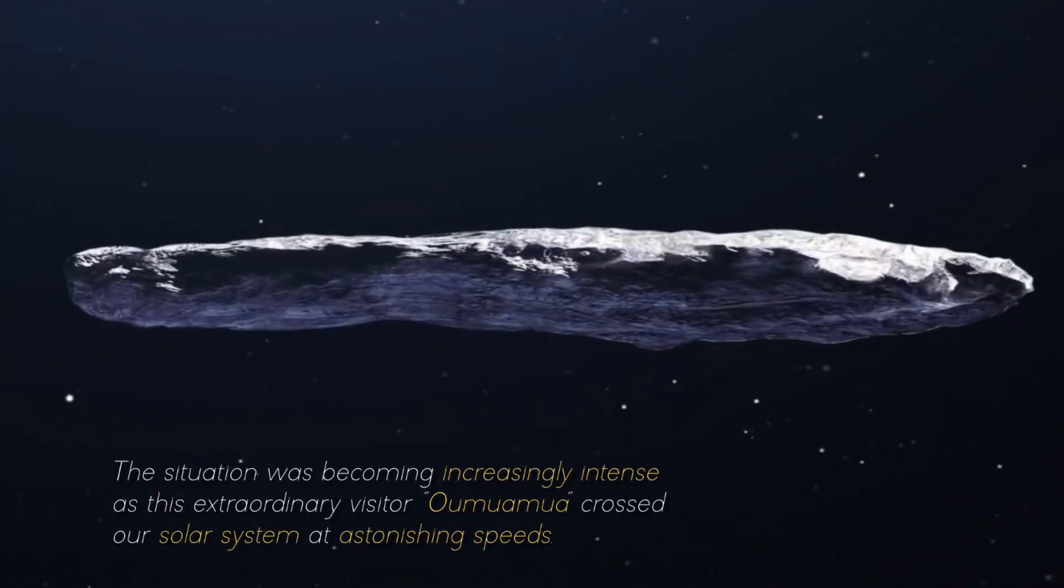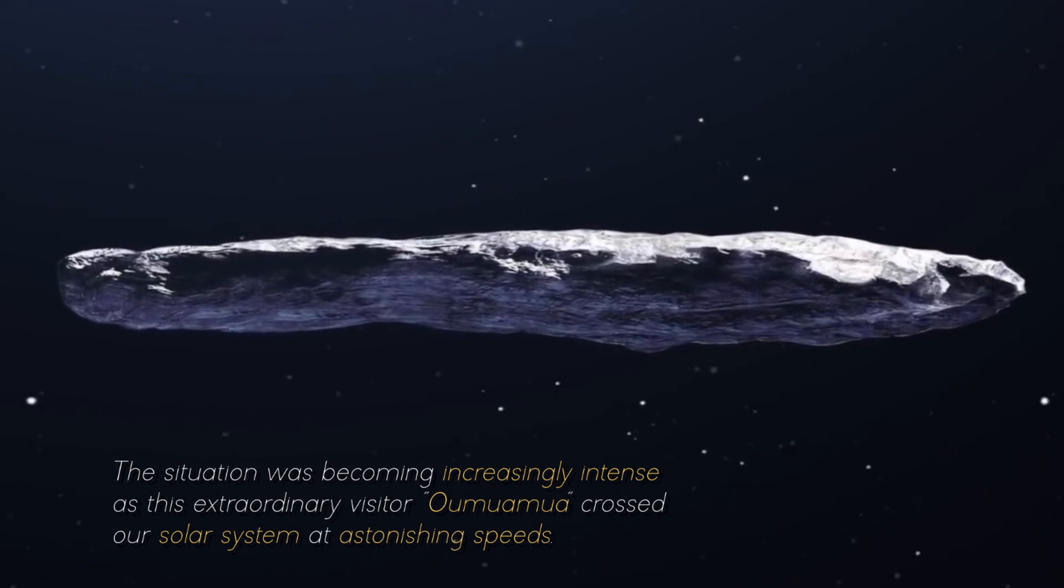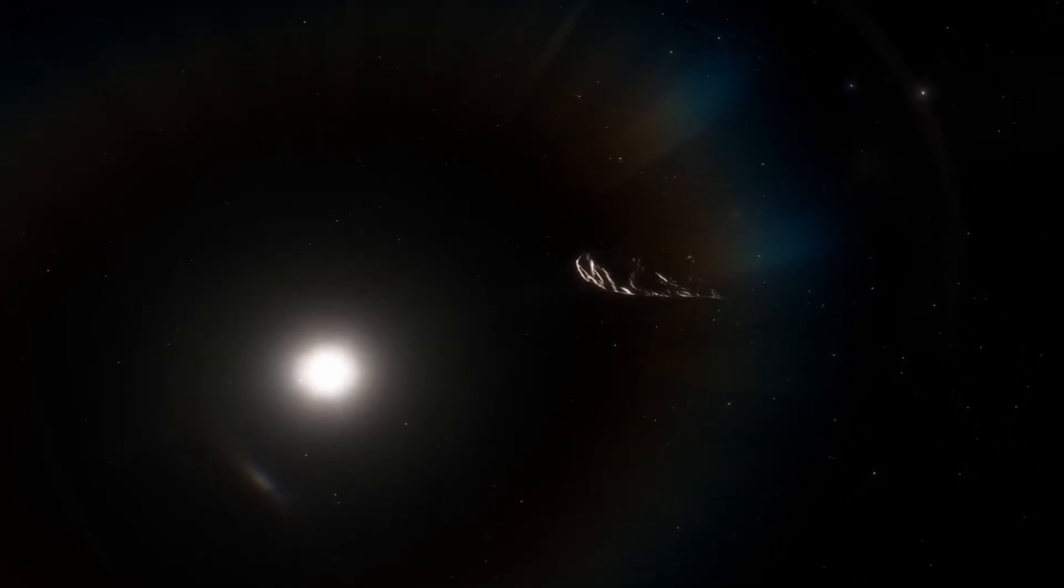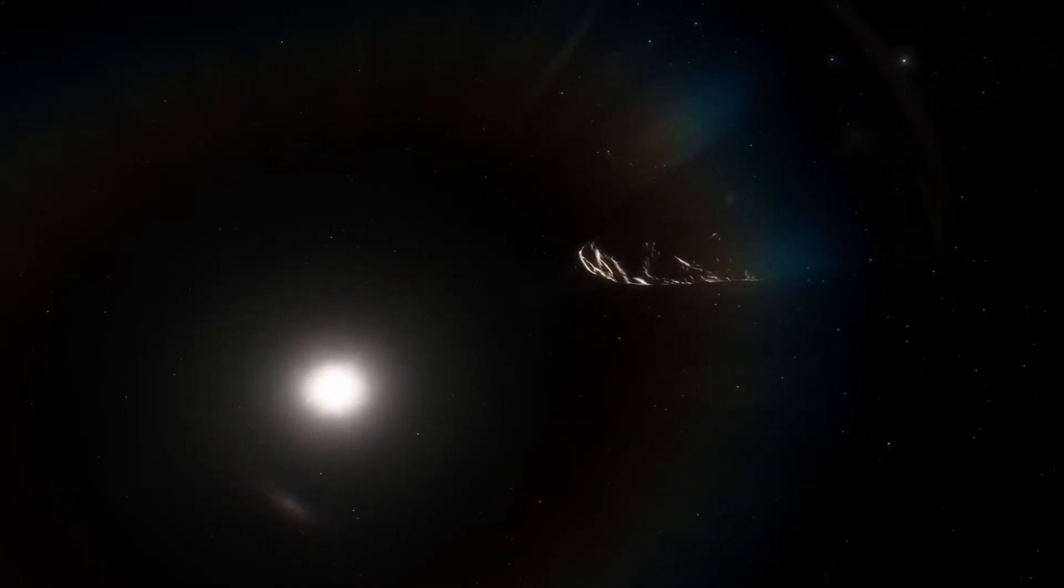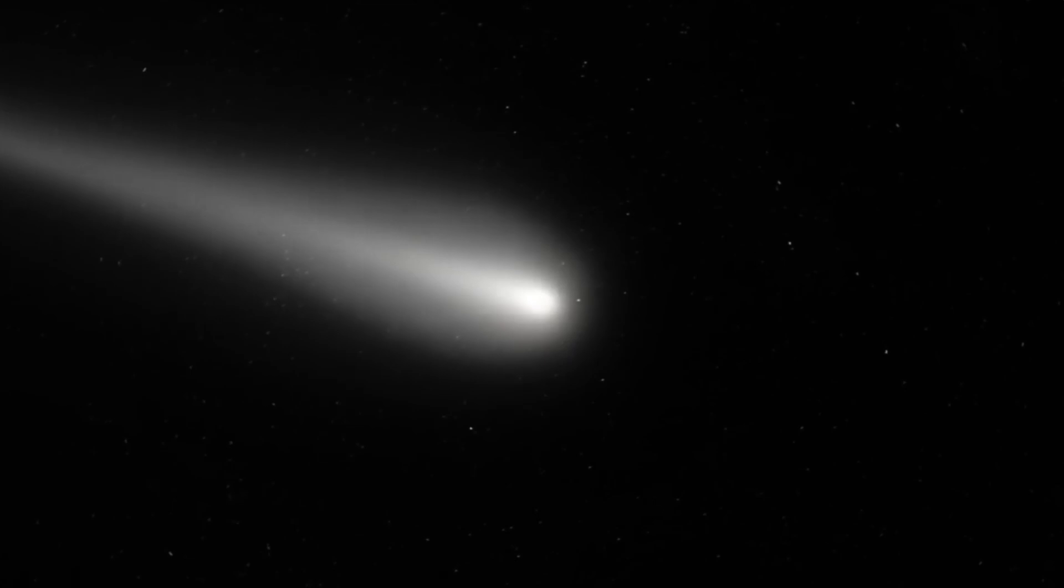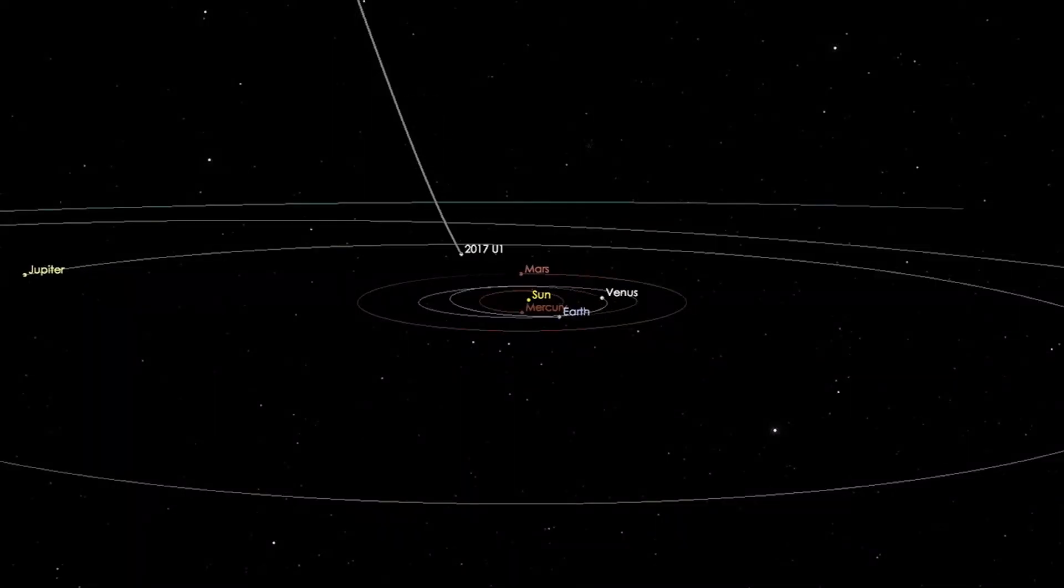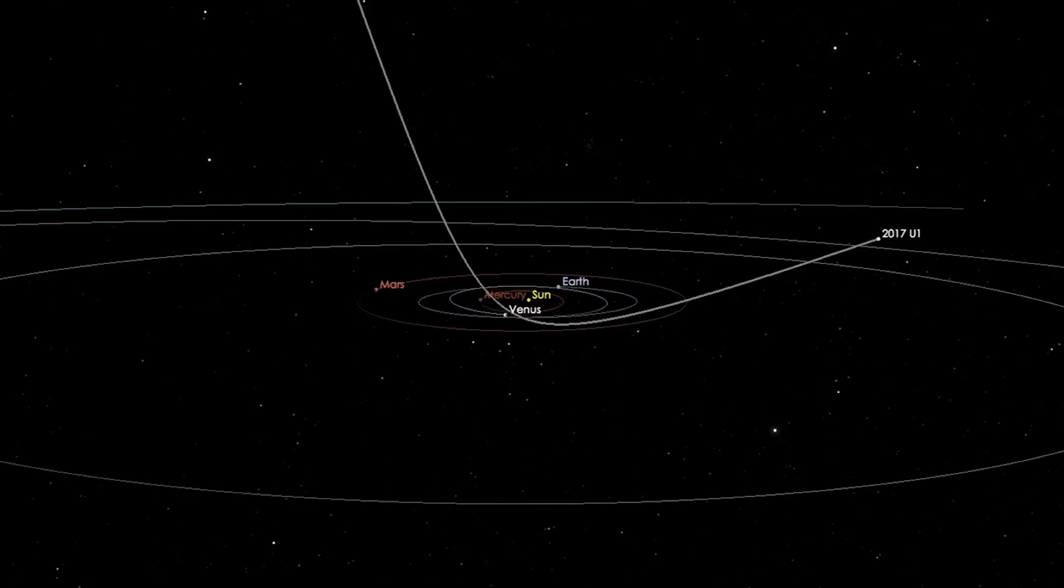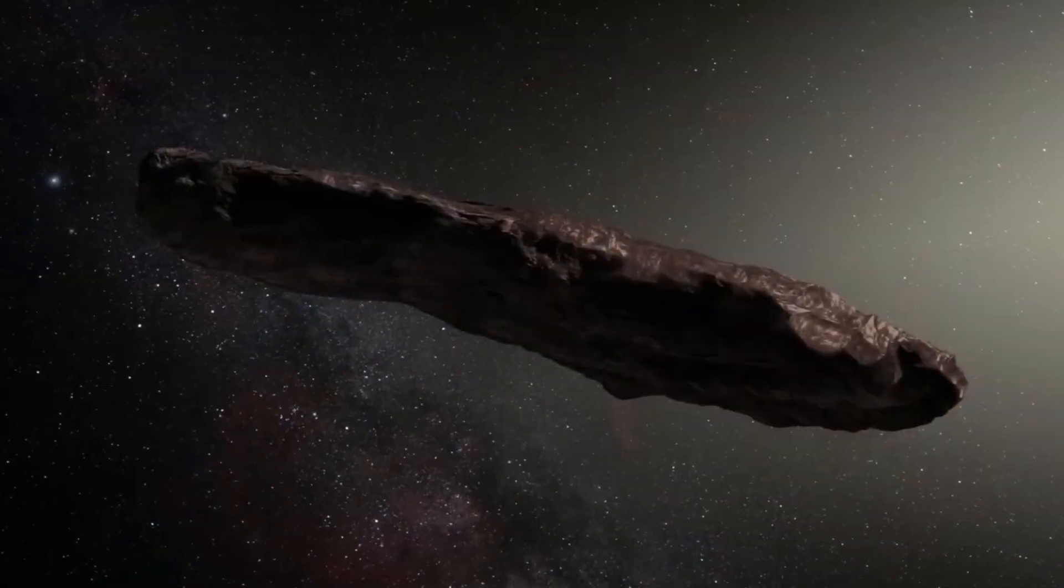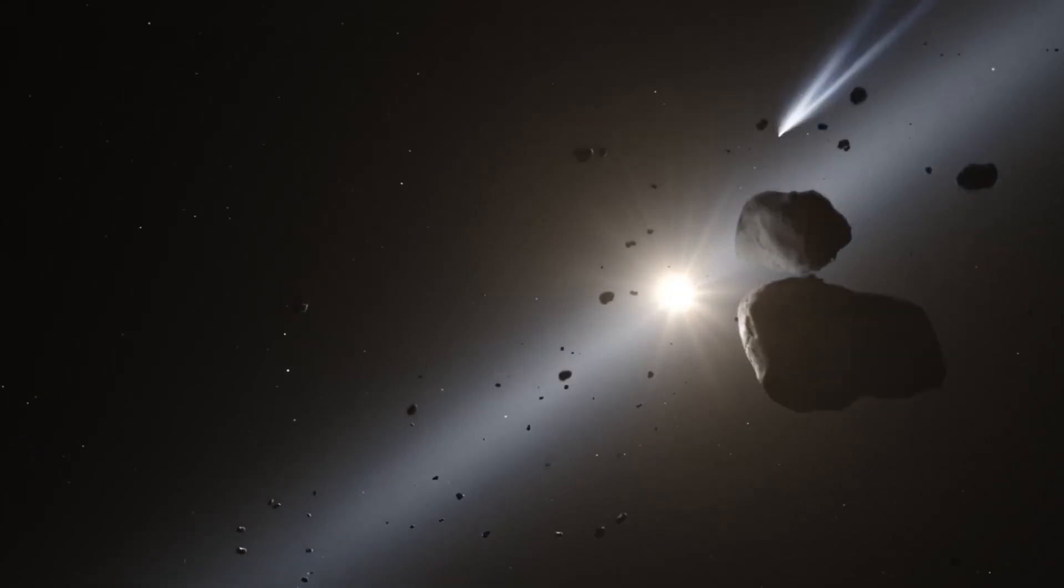The situation was becoming increasingly intense as this extraordinary visitor, Oumuamua, crossed our solar system at astonishing speeds. Each passing moment became crucial as time was rapidly running out for the researchers. They were faced with an imminent and daunting challenge, with only 11 days at their disposal. They had to seize this opportunity to gather as much information as possible about this peculiar cosmic traveler before it got too far away to be studied. The urgency was evident, for with each tick of the clock, the window of opportunity was getting smaller and smaller. A quick and effective analysis was needed, while the pressure on the research team was steadily increasing.